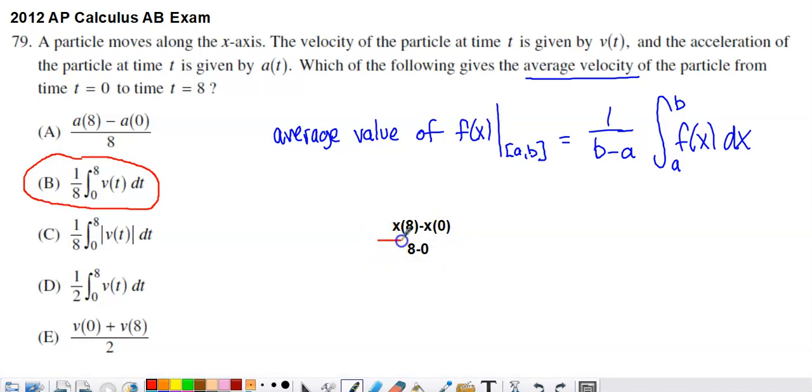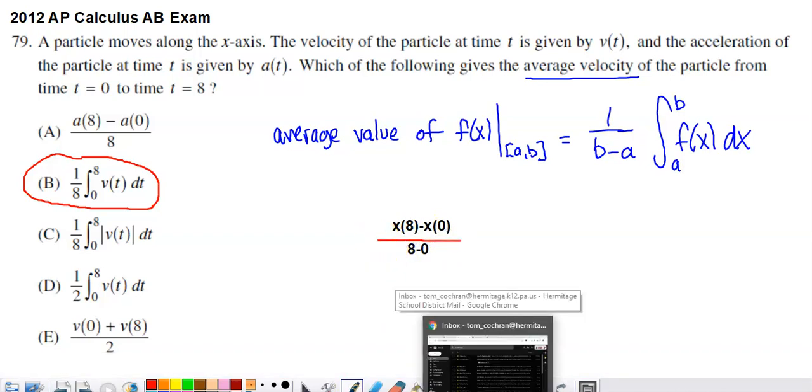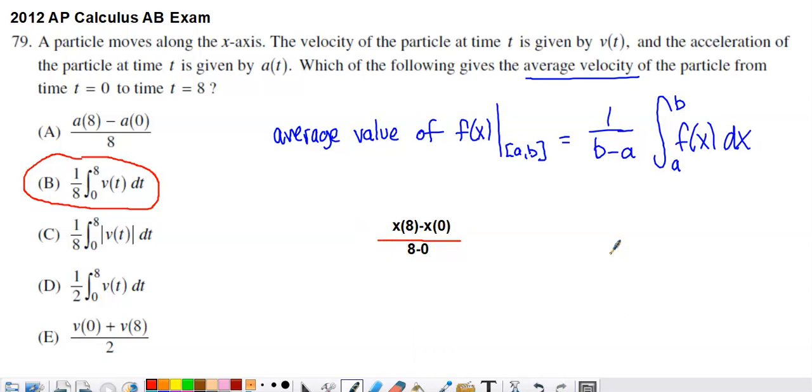this right here is the average rate of change of position. Well, the rate of change of position is velocity. This would be another way to measure average velocity. It's not an option. It could be on a different version of the test, though. But hopefully you understood why we arrived at the option that we did.